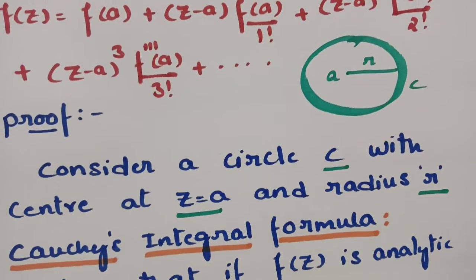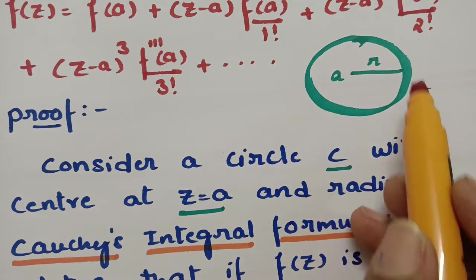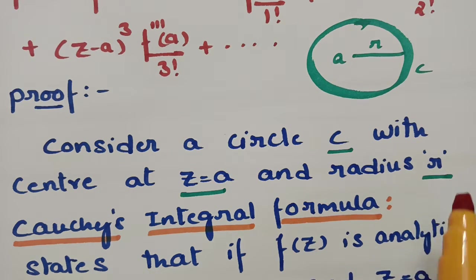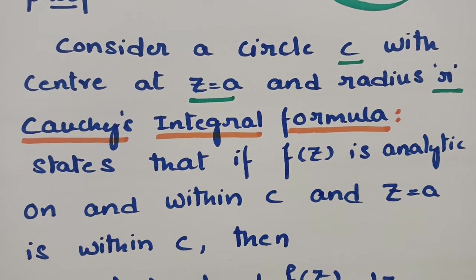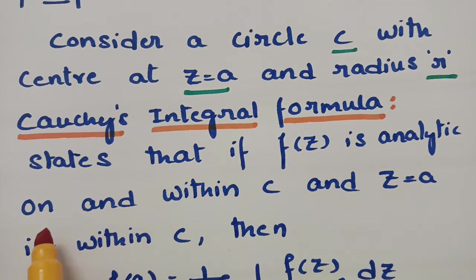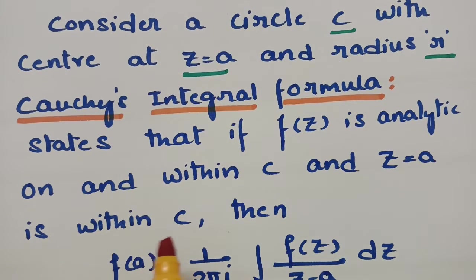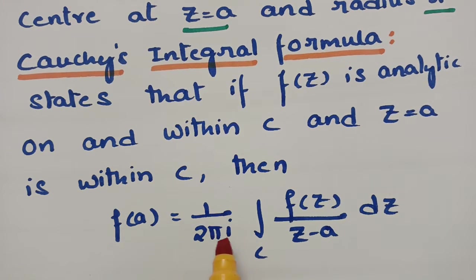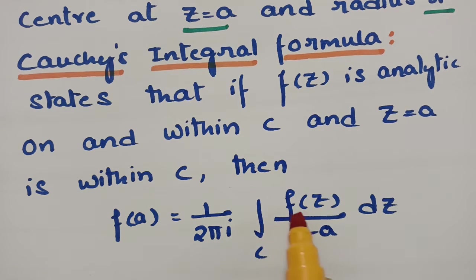In order to prove this, let us consider circle c with center z equal to a and radius r. Then according to the integral formula, if f of z is analytic on and within c and z equal to a is within c, then f of a is equal to 1 by 2 pi i, integral c, f of z by z minus a into dz.